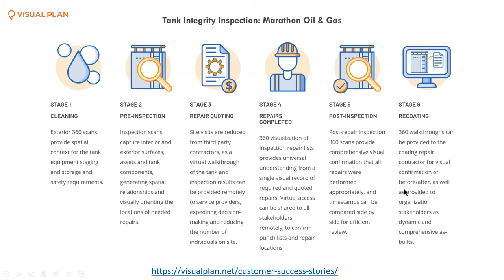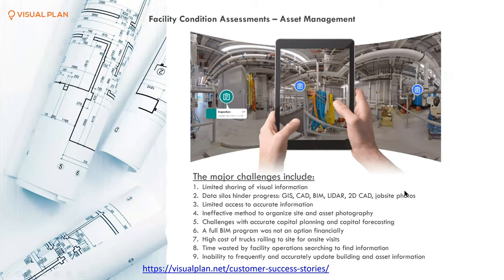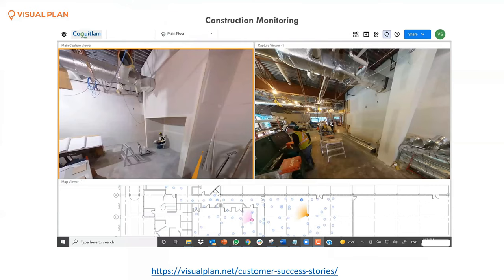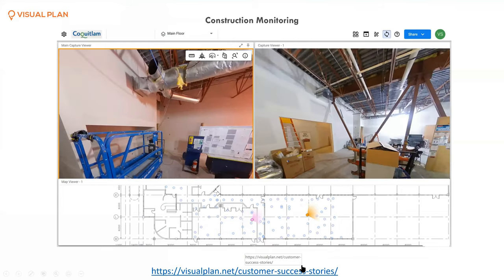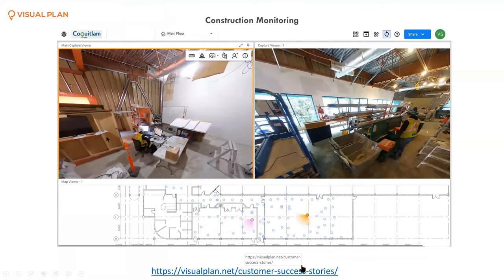We have a case study on our website with more details. Another project with local municipalities in the Vancouver, Canada area involves organizations without an active BIM program and with very little or inaccurate facility documentation. This provides a cost-effective way to create visualization and understanding of where things are located. We're starting to tag assets and add attributes — make, model, serial number — so service providers can access that information. This removes the trucks rolling back and forth, eliminates data silos, and reduces wasted time. On the same project, we're doing construction monitoring on a weekly basis to understand where the project stands.